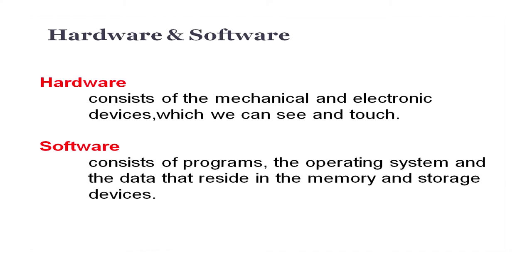Hardware consists of mechanical and electronic devices which we can see and touch. For example, you can see the keyboard, the mouse, the monitor — all these are hardware devices. Software consists of programs, the operating system, and the data that resides in the memory and storage devices. For example, a compact disc itself is hardware, but the programs, songs, and movies stored inside it are software.